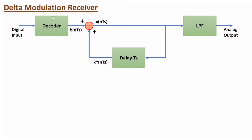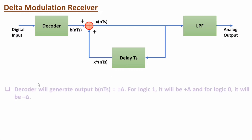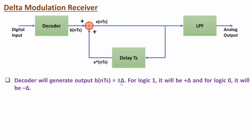Now let me discuss the delta modulation receiver. The delta modulation receiver also has the same circuit as differential PCM. First, digital input is given to a decoder. The decoder generates plus or minus delta — if logic 0, it generates minus delta; if logic 1, it generates plus delta. In the feedback with delay of Ts, we have a feedback signal that is added, generating a sampled signal. If you pass it through a low pass filter, you will again have the analog signal.